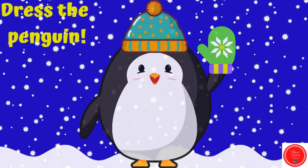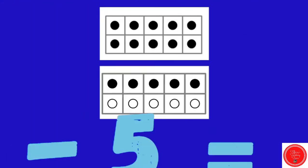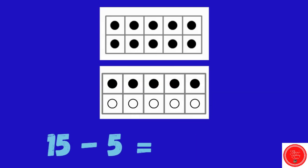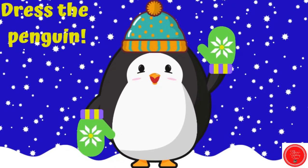There's a mitten. 15 minus 5. We have to take away 5. How many are left? 10. Nice work. There's the other mitten.